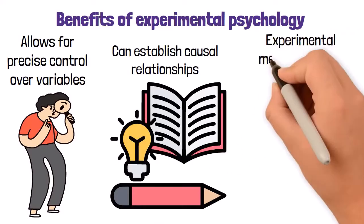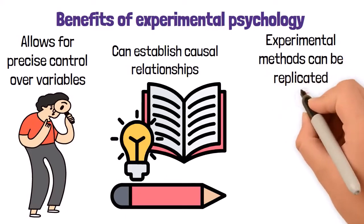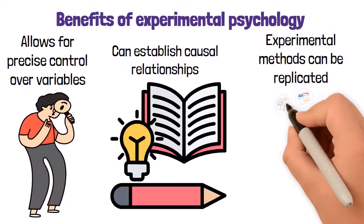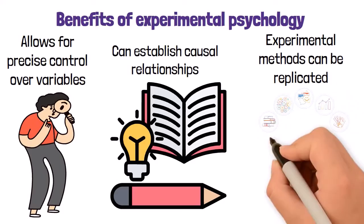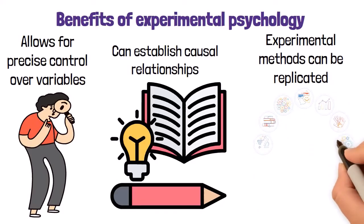Lastly, experimental methods can be replicated. The structured nature of experiments allows other researchers to repeat studies, verify results, and build upon previous findings, contributing to the advancement of psychological science.